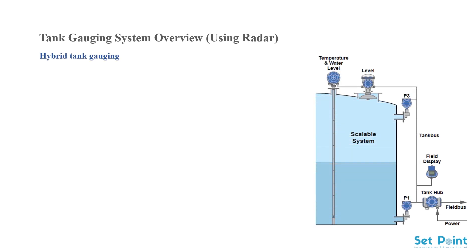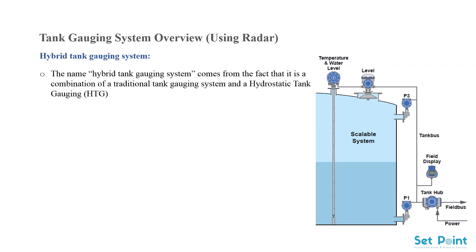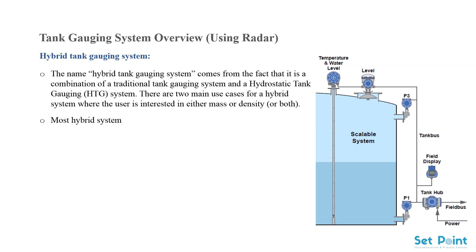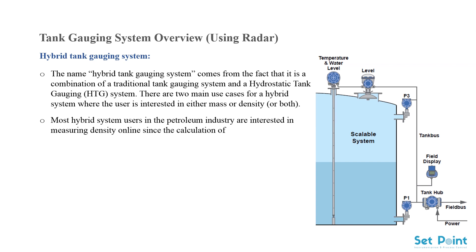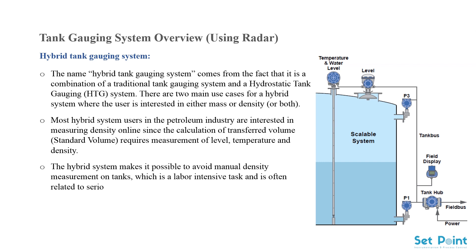The hybrid tank gauging system gets its name from the fact that it is a combination of a traditional tank gauging system and a hydrostatic tank gauging (HTG) system. There are two main use cases: where the user is interested in mass, density, or both. Most hybrid system users in the petroleum industry are interested in measuring density online, since calculating standard volume requires measurement of level, temperature, and density. The hybrid system avoids labor-intensive manual density measurements, which are often prone to serious errors if not done properly.